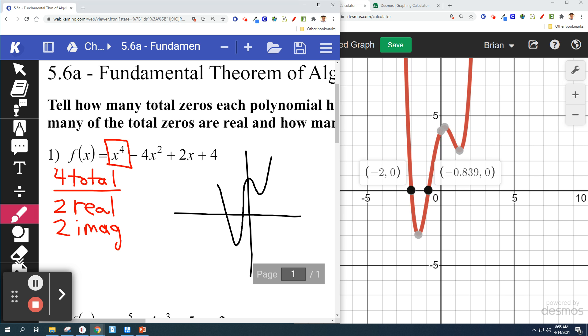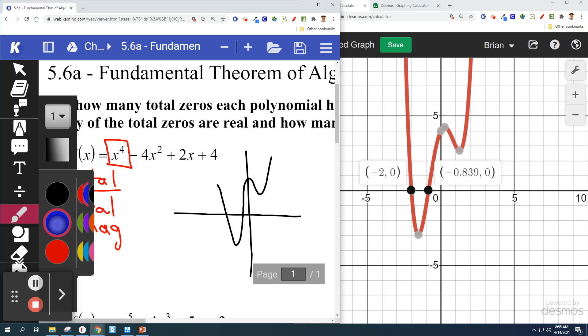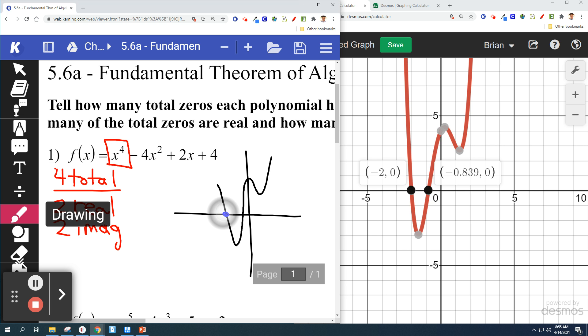But we want to label the real zeros on this graph. So I'm going to highlight those two. And we know that that solution is at negative 2. And this one is at negative 0.839. And that's approximate. That's rounded off. It's not perfect. They won't be nice numbers today.